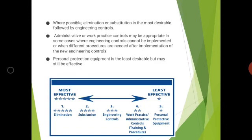In terms of effectiveness, elimination is the most effective — removing the hazardous material entirely. Substitution is next, followed by engineering controls through workplace design changes. Fourth is administrative and work practice control, which requires involvement at both the administrative and worker level through proper training or change in procedure. The least effective is personal protective equipment, though it is still effective if no other option is available.